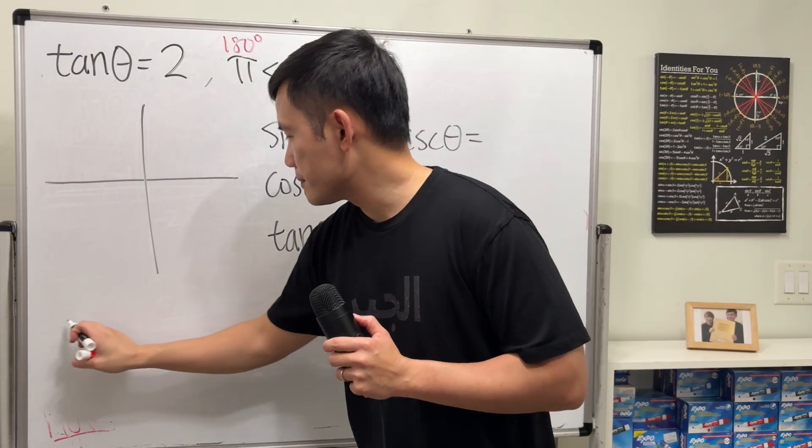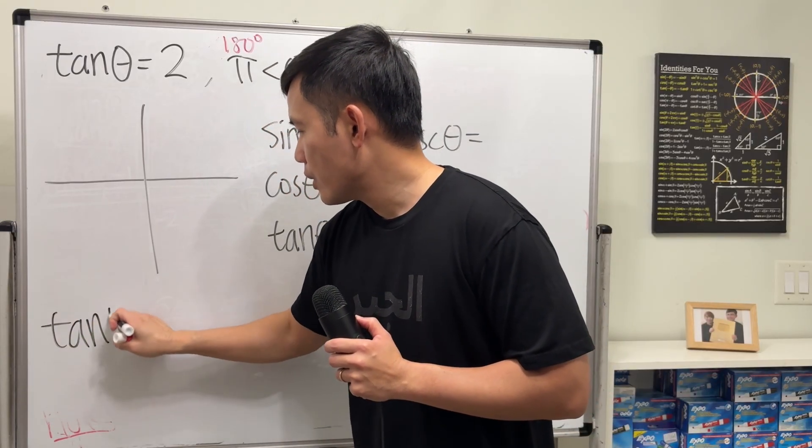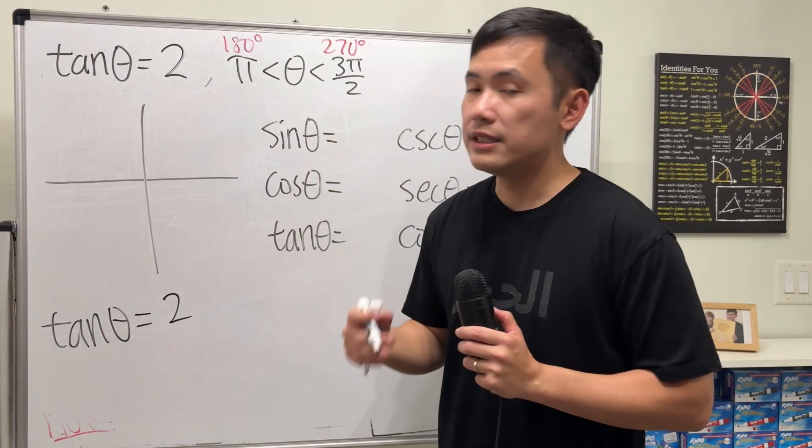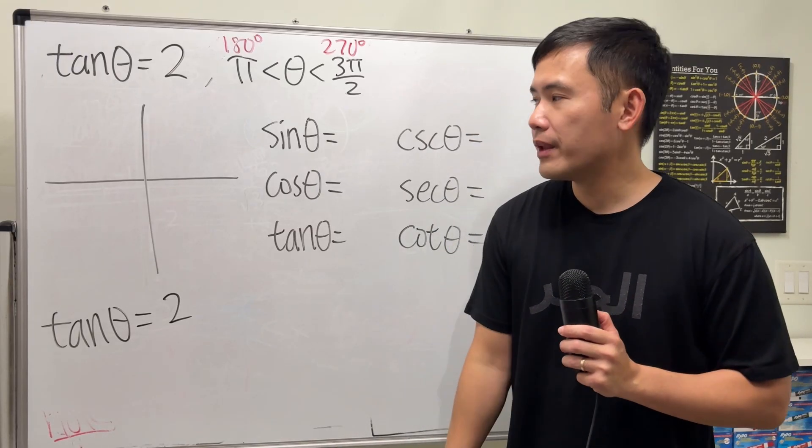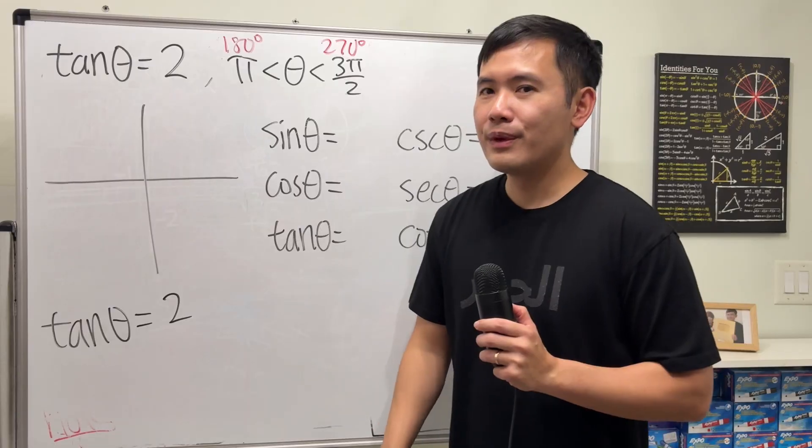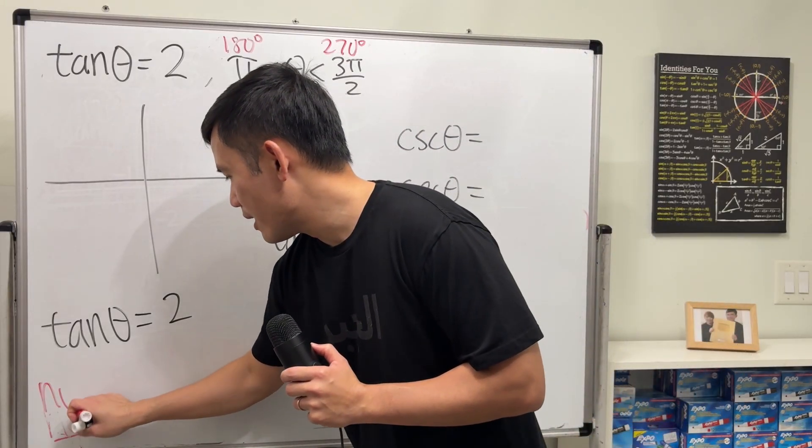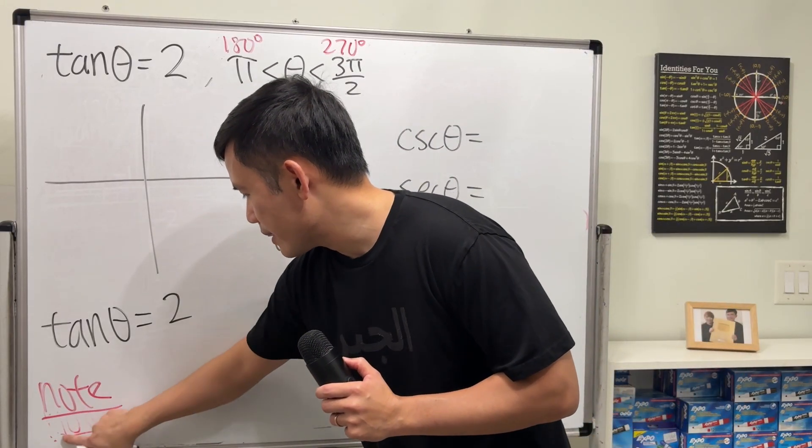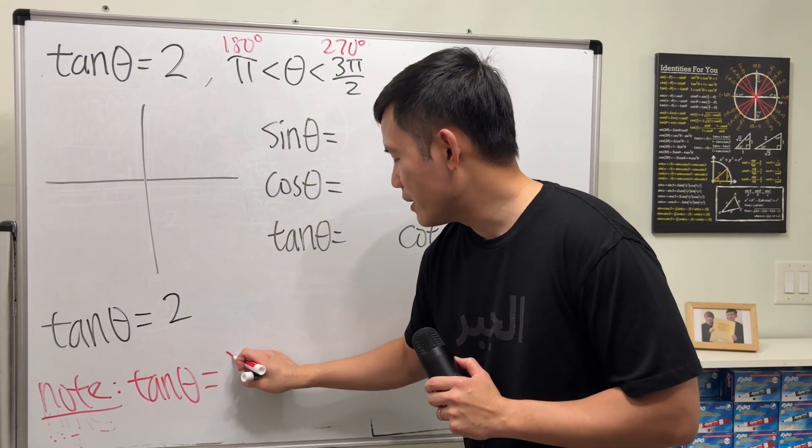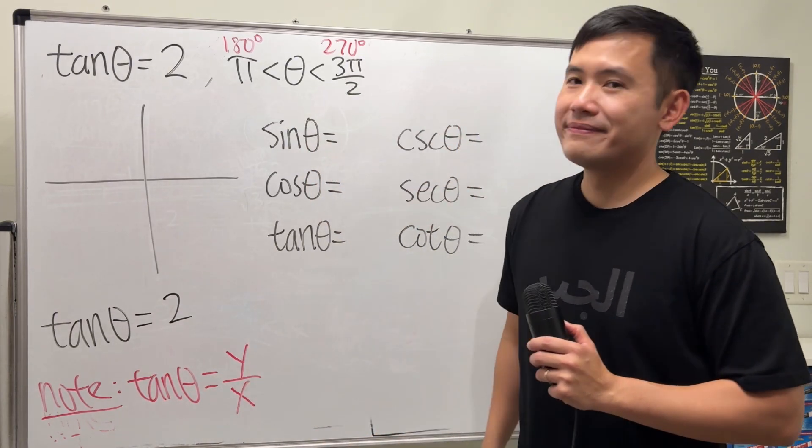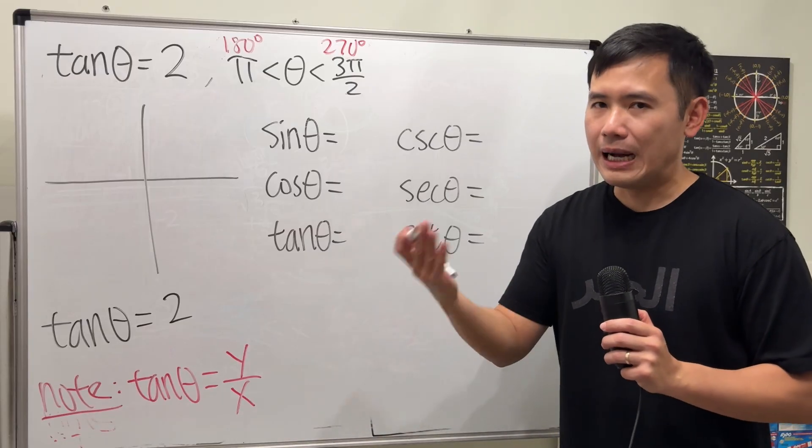Now start with tangent theta equals 2. Usually we say tangent is opposite over adjacent, but that's only when you have a right triangle. When you are on the xy plane, this right here is a better definition for you to remember. Note when we have tangent theta, this right here is y over x, and really it's the same as opposite over adjacent once you have the reference triangle.